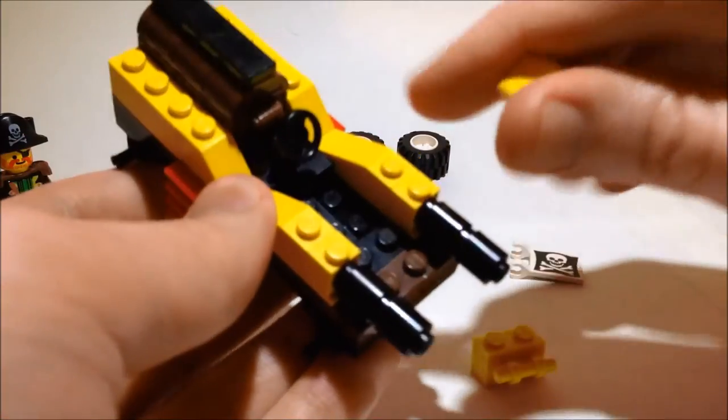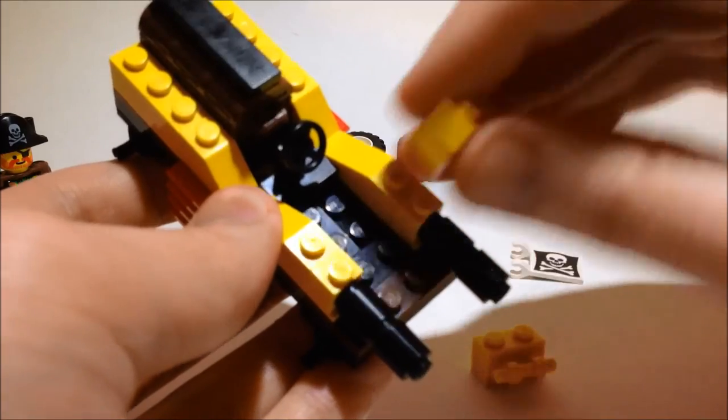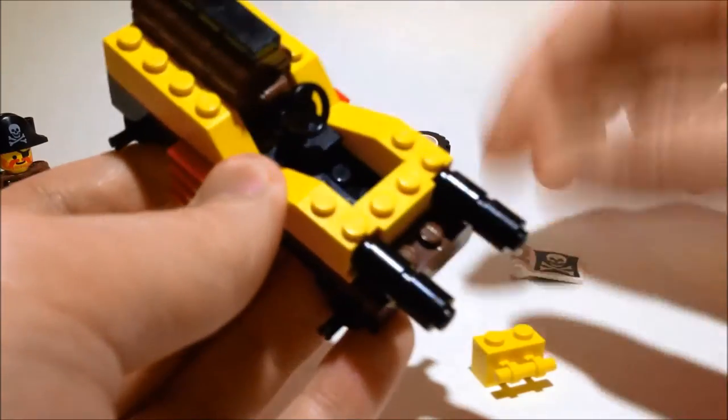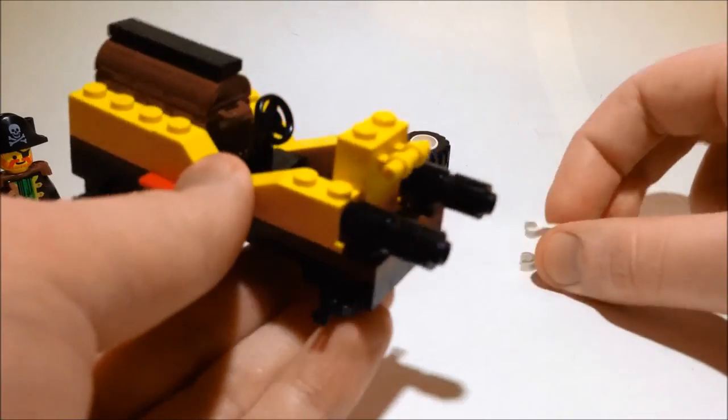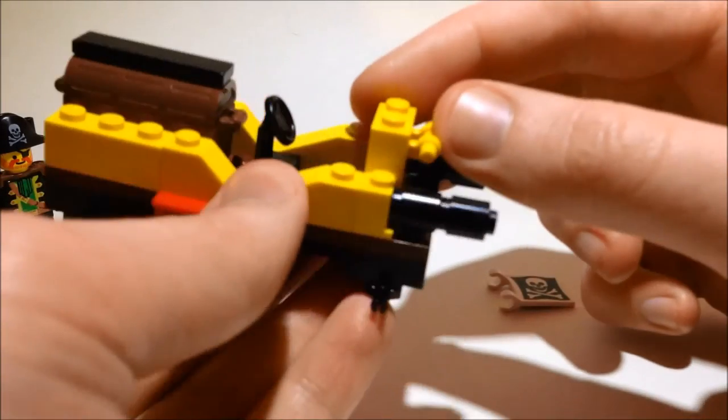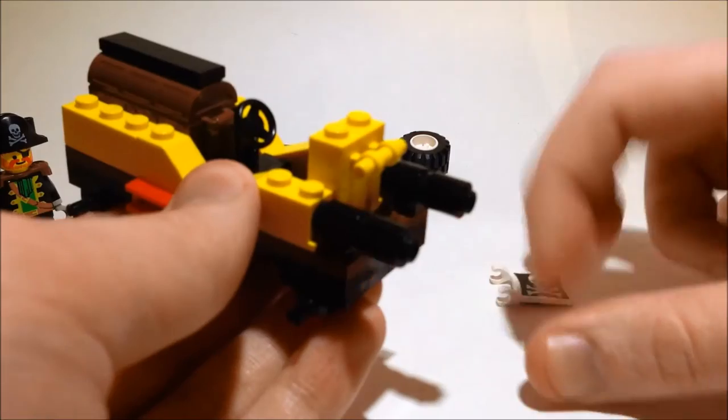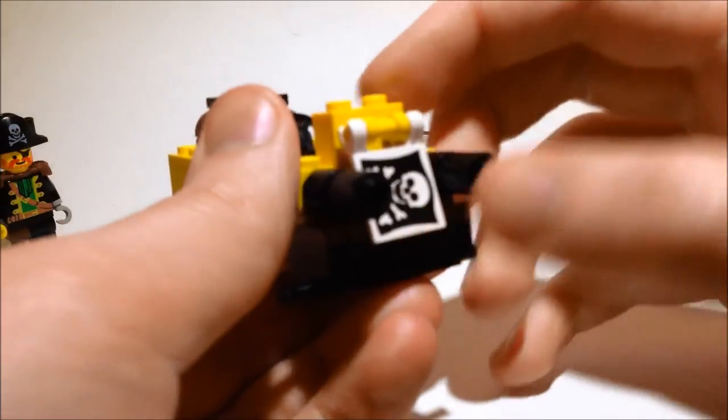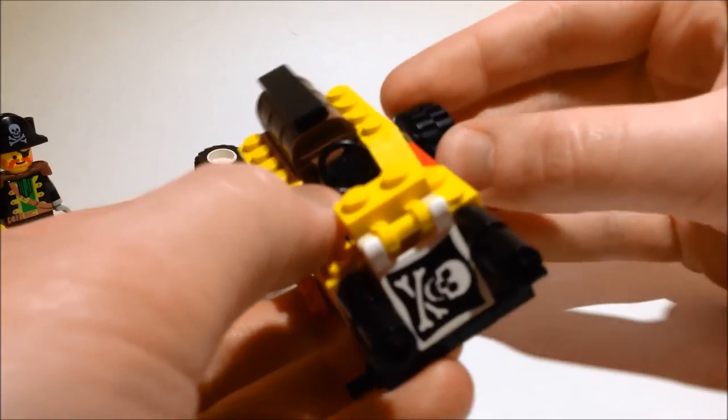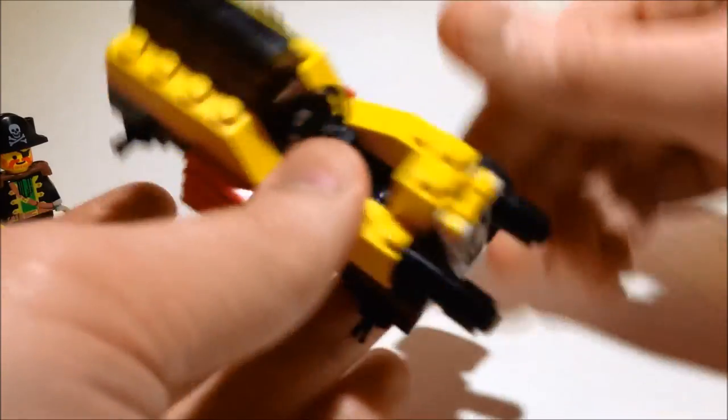For this back bit we have the black 1x2, this doesn't have to be brown, it can be brown if you wish but it doesn't have to be, and we have the yellow 1x2 with a clip on the front, and then we put the pirate flag there and clip all four wheels on.